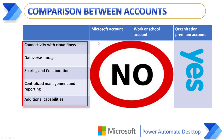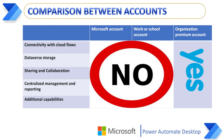However, some features are not available across all account types. Connectivity with cloud flows is not available in the Microsoft account or the work or school account, unless the work or school account is upgraded to premium. Data storage is not available in the Microsoft account or work or school account — only in the organization premium account. Sharing and collaborating flows is also possible only with the organization premium account. Centralized management and reporting, and additional capabilities like triggering and scheduling flows, are not available in the Microsoft account or work or school account. These features — data storage, sharing and collaboration, centralized management and reporting, and connectivity with cloud flows — are available only with the organization premium account.